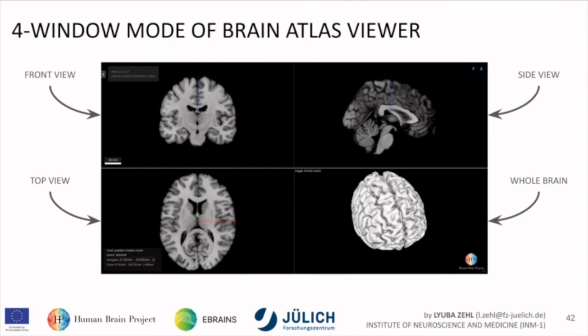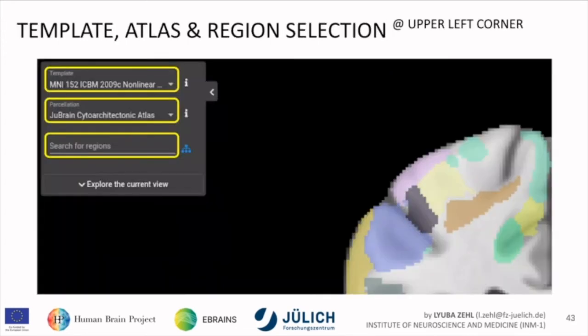To select a template and atlas and region, go to the upper left corner of the Atlas viewer. There is a field you can either hide or unlink. In the upper part you select the brain template, and in the lower part the parcellations — the available atlases. Then you can search for a region, or click through the panel to see a hierarchical organization of the regions.